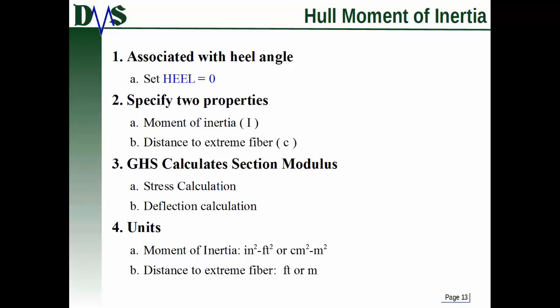Section modulus is not the only piece of information that you can enter for GHS. You can also do the hull moment of inertia. You're going to do this by actually specifying two separate properties: the moment of inertia and the distance to the extreme fiber. And again, just like section modulus, this is associated with a specific heel angle, so set heel equal to zero before you define this.